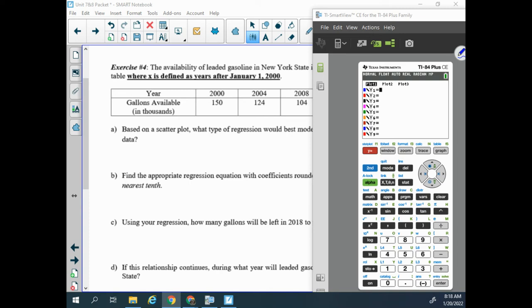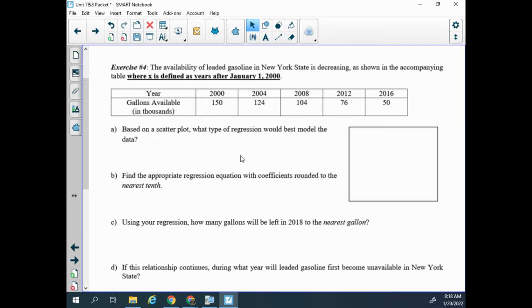So we are over on the next page now where X is defined as years after January 1st 2000. This problem, if I look at my years I have 2003, 2016, the problem has decided that those numbers, or whoever wrote the problem said I don't really want to use those huge numbers. I'd like my equation to be more manageable.